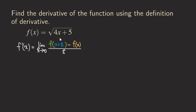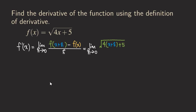Now we have a radical function. This is one of those easier ones because we have a linear expression inside the square root. I already put down the definition of derivative, and we are going to write down the numerator first, with the denominator just being h. The limit is h approaching 0. For f(x + h), we plug x + h into x, so we get the square root of 4(x + h) + 5, which is 4x + 4h + 5 under the radical, minus the square root of 4x + 5.